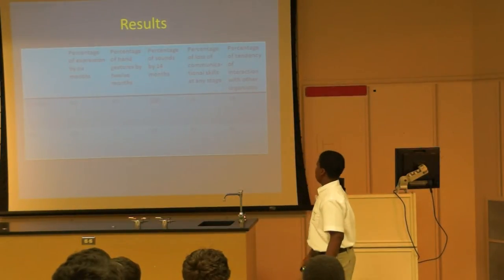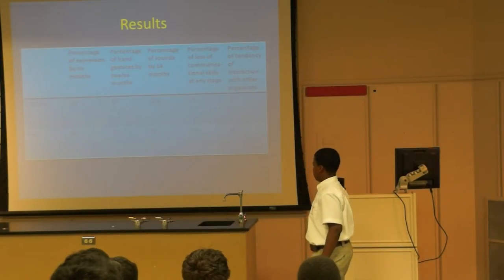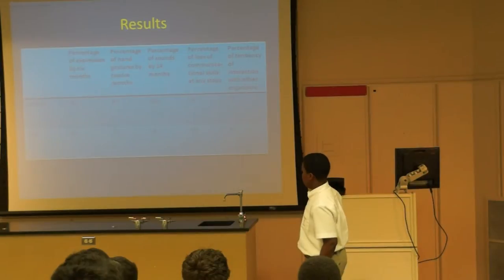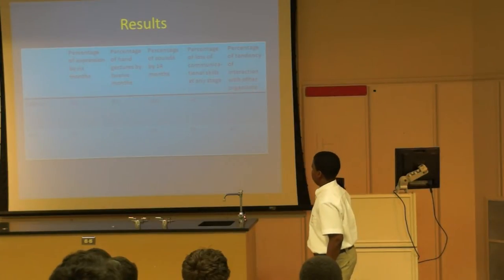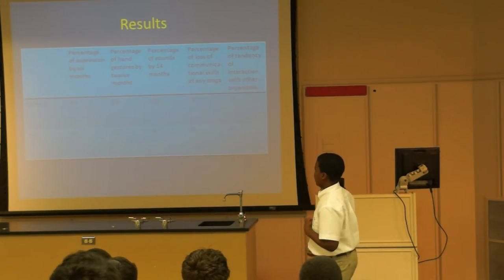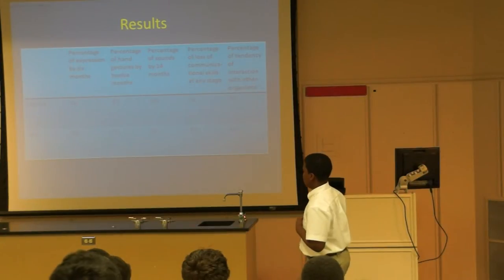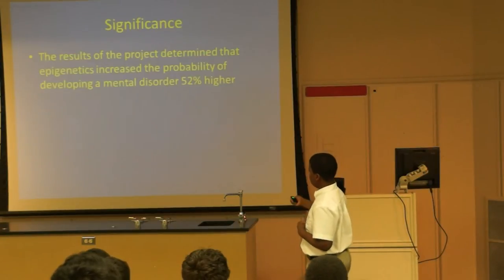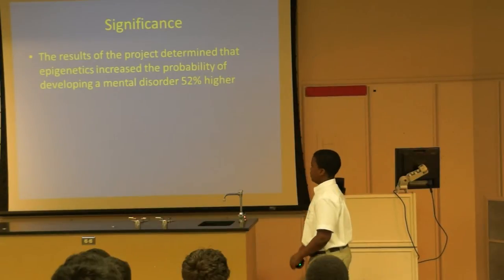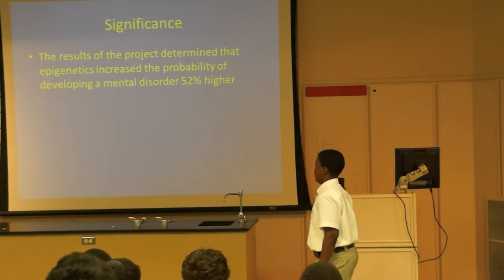I don't know if you can see this, but the results show that the control group had an equally higher result than the test group observed only in San Jose, California. One likely cause is that OXCR did burn out in a lot of the primates, which forced them into autism symptoms. The significance of these results is that this project determined epigenetics has increased the probability of developing autism by 52% higher.